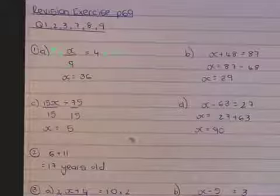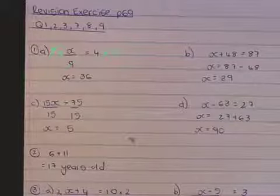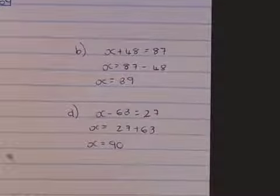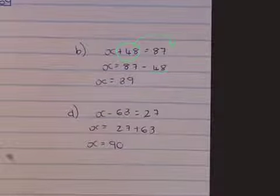For B, if I add 48 to a certain number, so add 48 to x, I get 87. So x plus 48 equals 87. How do I undo addition? I take it across and then I subtract.